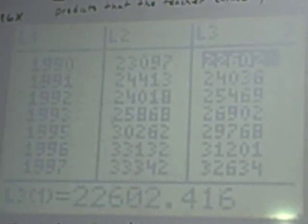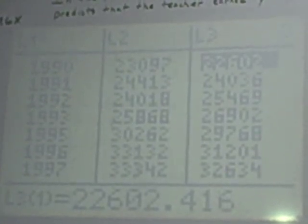So now I have my x's in list 1, my y's in list 2, which are my actual salaries, my y primes, which are my predicted salaries, in list 3. In list 4 I'm going to subtract my y's minus my y primes, or my list 2 minus list 3 and square them.